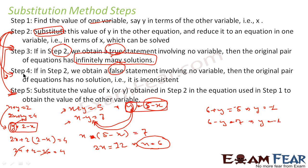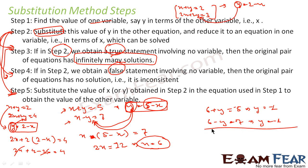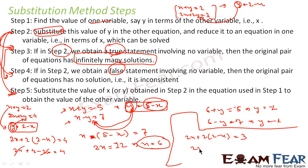Now let me show the scenario where we get a false statement — an inconsistent system. Take x plus y equals 2 and 2x plus 2y equals 3. Again, I write y in terms of x: y equals 2 minus x. Substituting into the second equation: 2x plus 2(2 minus x) equals 3, which gives 2x plus 4 minus 2x equals 3. The x terms cancel, leaving 4 equals 3, which is a false statement.